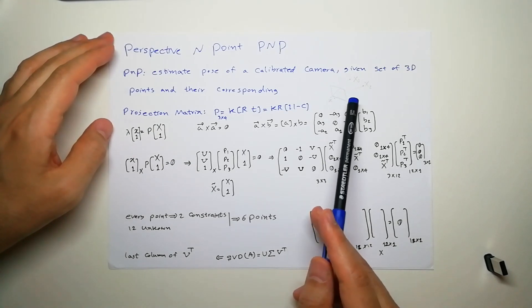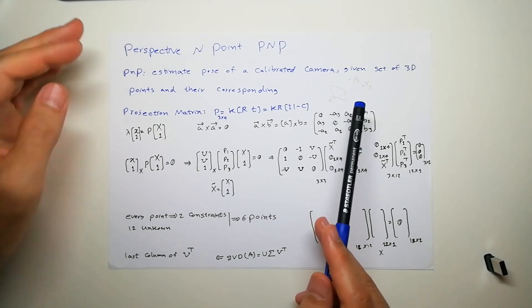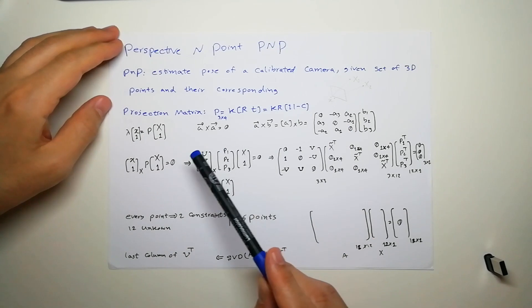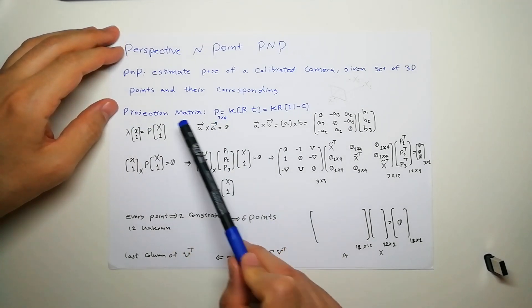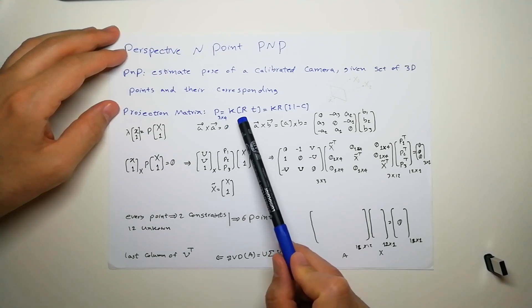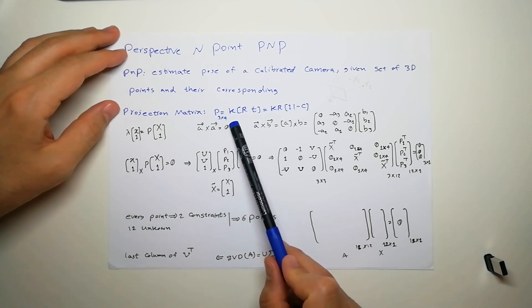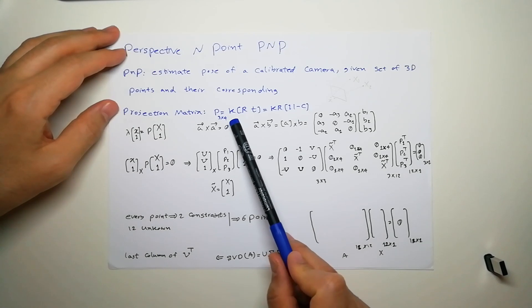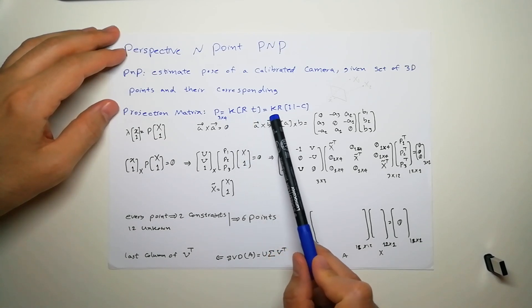Let's review projection matrix. Projection matrix was a 3x4 matrix that consists of K R t, the rotation translation and intrinsic camera property, which we can write as K R [I | -C] where C is the center of the camera.